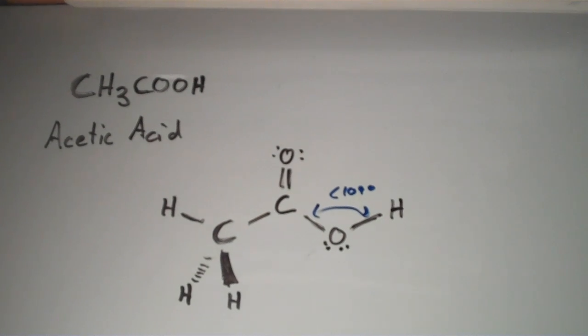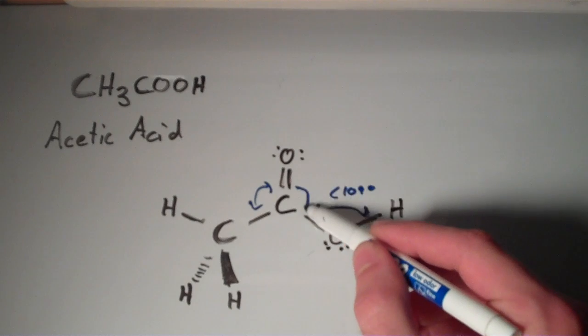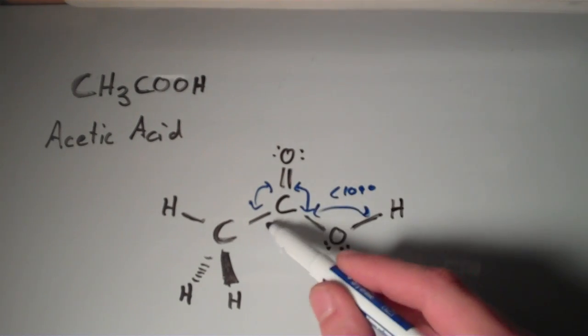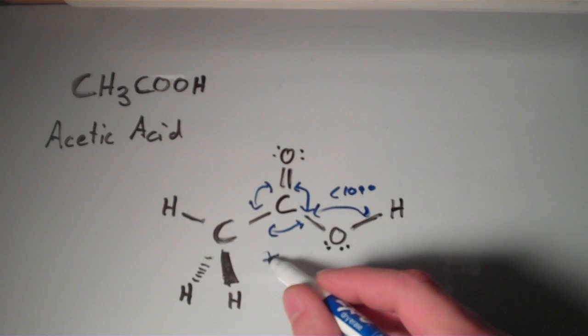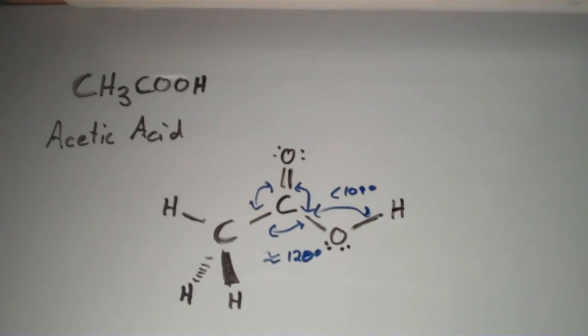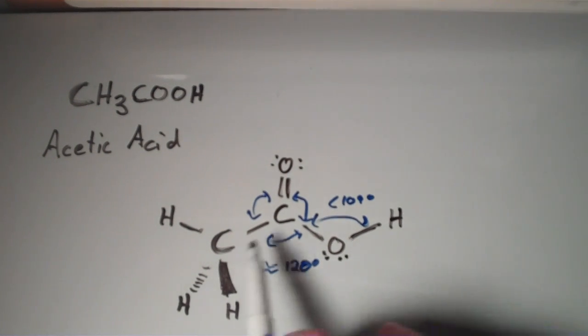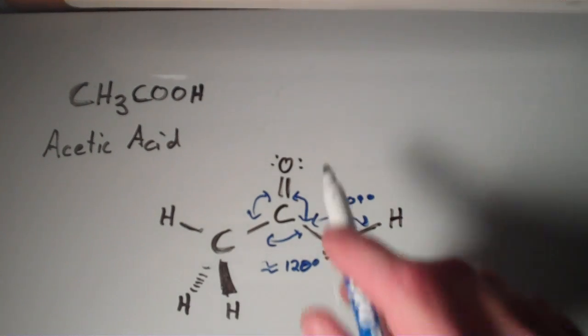Moving on to the other central atom, this angle is going to be about the same as this angle, is going to be about the same as this angle. Those are all going to be approximately 120 degrees. Might be some slight deviations from those values, just because this thing isn't really symmetrical, this group is different from this group, and so forth.